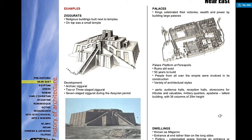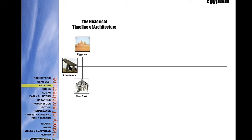Now let's look at structures in the Middle East or Near East. The famous structure here is the ziggurat — square in plan with three stages, meaning three terraces or three floors. It is a very large structure, like a palace, and its purpose was to serve as a temple for the gods.